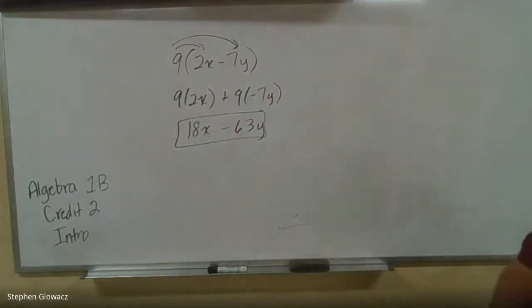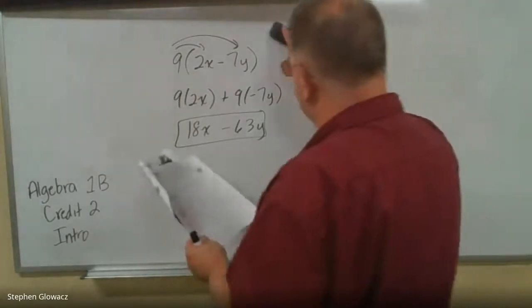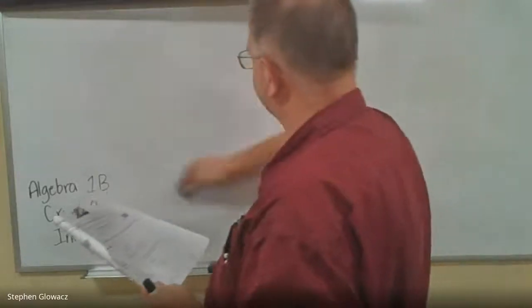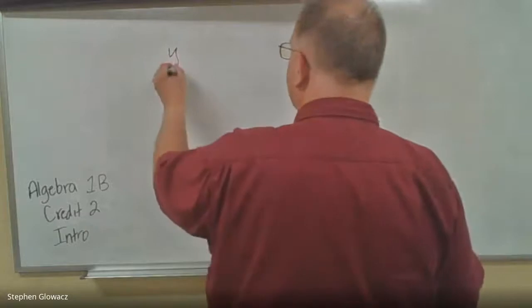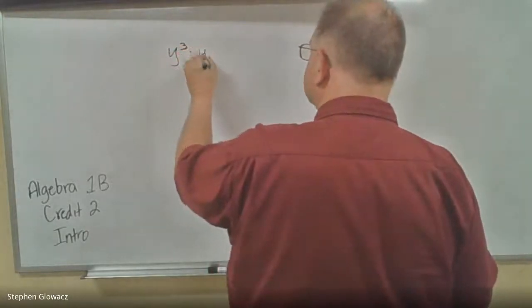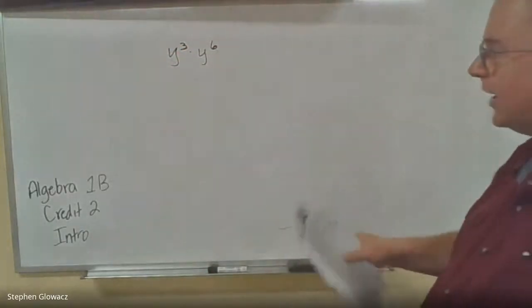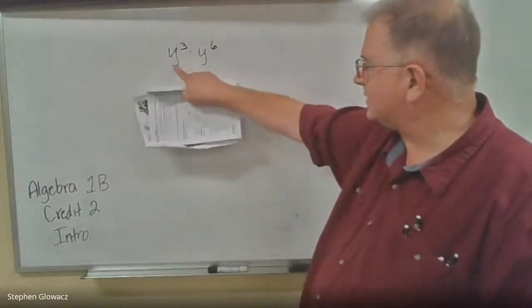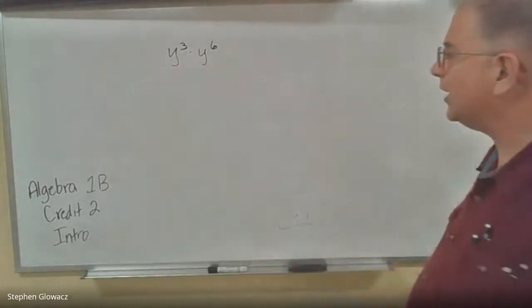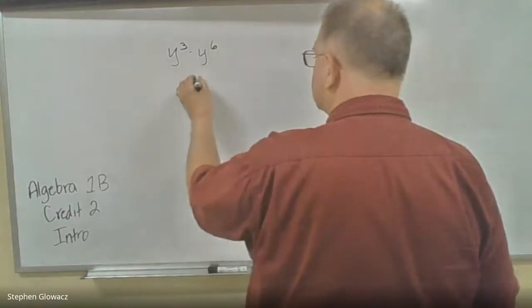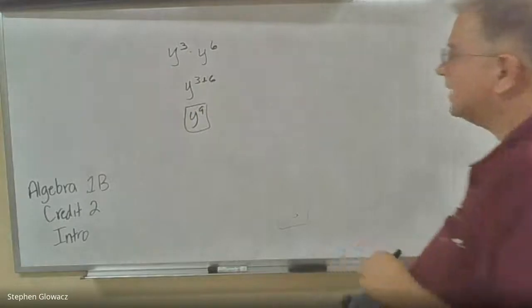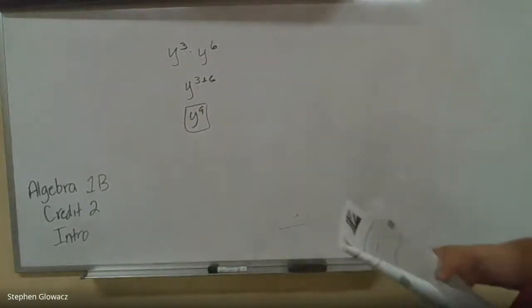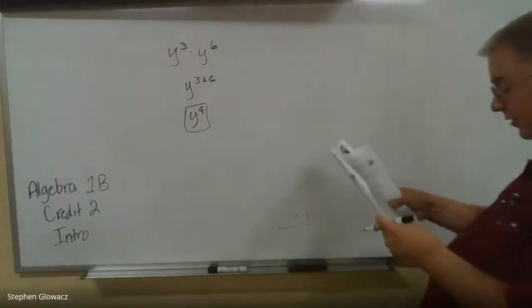Finally, numbers 7 through 10 at the bottom, and we're dealing with the laws of exponents. Number 7, we've got Y to the third times Y to the sixth. So remember, when you're multiplying and you have the same base, the base here is the Ys, you add the exponents. So it's Y to the 3 plus 6. 3 plus 6 is 9.